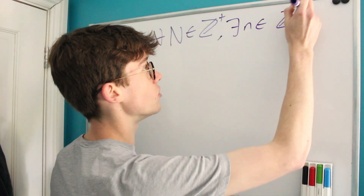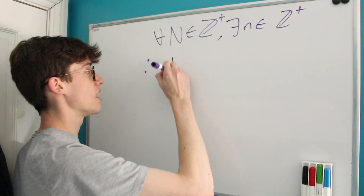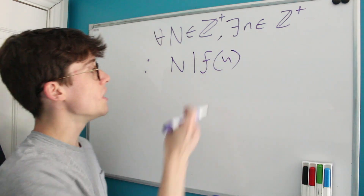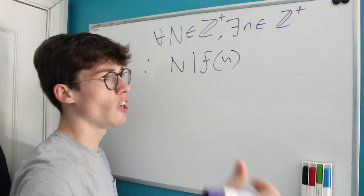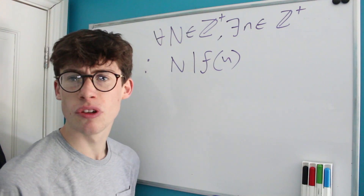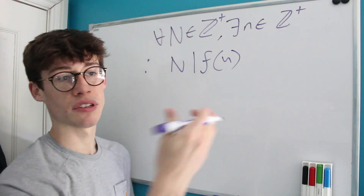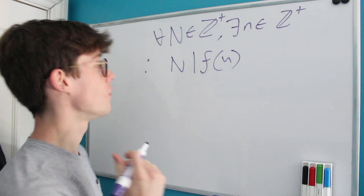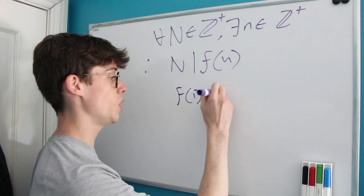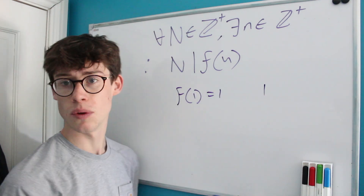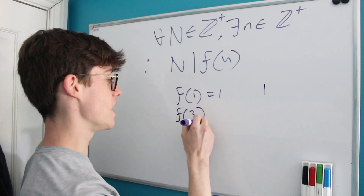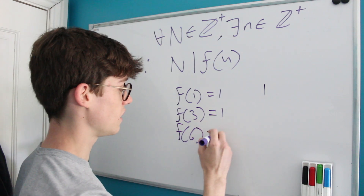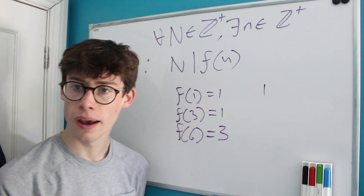What does that mean? It means that our function, for some input n, has to be a multiple of every single positive integer at some point — that's what we're being asked to prove. The problem also gives us examples: f(1) = 1, because the only list we could make is just {1}; f(3) = 1; and f(6) = 3.